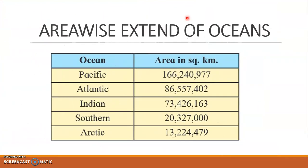Now we will look at the area-wise extents of the oceans. The Pacific Ocean ranks first, followed by the Atlantic Ocean second, and the Indian Ocean third. Then come the Southern Ocean and the Arctic Ocean. This shows the coverage of each ocean with their respective areas in square kilometers.